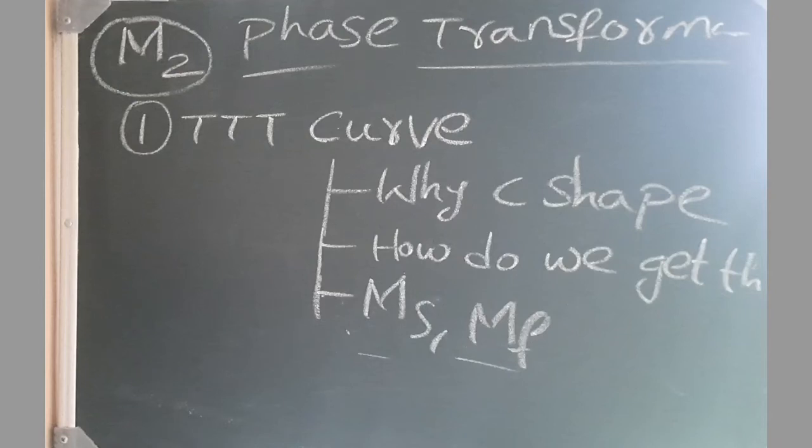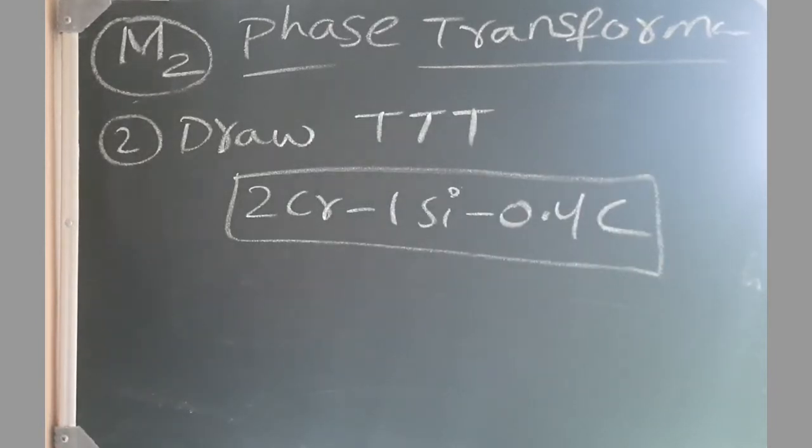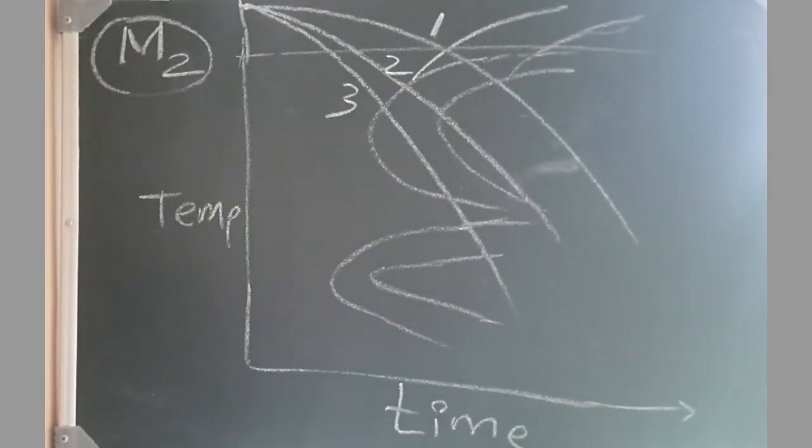Then second member, so first question from him is draw TTT curve and why C shape, and then how do we get these TTT curves and how do we get martensitic start and martensitic finish temperatures. Next is draw TTT curve for 2 chromium 1 silicon and 0.4 carbon steel.